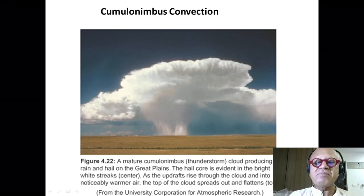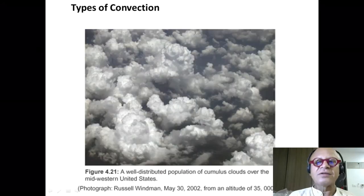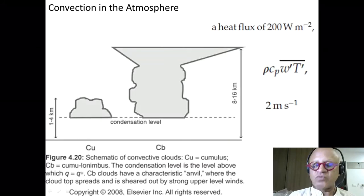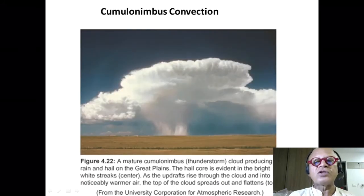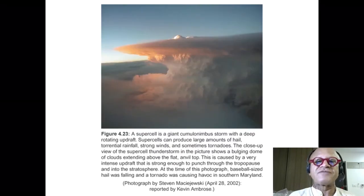This is the cumulonimbus, which has a strong updraft, which has produced rising motion through the clouds into warmer air. The top of the cloud does spread out and flatten, but not exactly the kind of anvil that we saw here. You can go on Google and find plenty of examples of very beautiful anvils that spread out in the upper atmosphere.